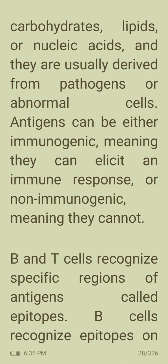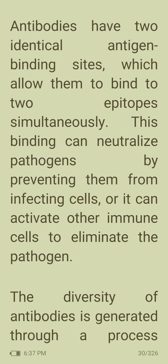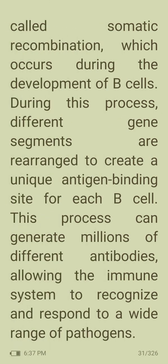Antigens can be proteins, carbohydrates, lipids, or nucleic acids, usually derived from pathogens or abnormal cells. B cells recognize epitopes on the surface of antigens, while T cells recognize epitopes presented on the surface of infected cells. Binding of B or T cells to their epitopes triggers activation of the immune response. Antibodies are Y-shaped proteins produced by B cells that bind to specific antigens. They have two identical antigen-binding sites, allowing them to bind two epitopes simultaneously, neutralizing pathogens or activating other immune cells.